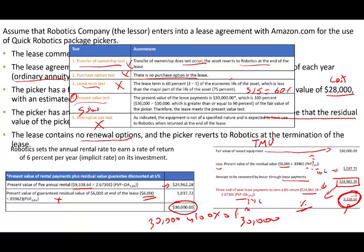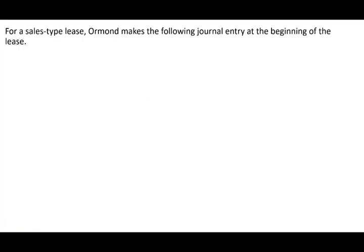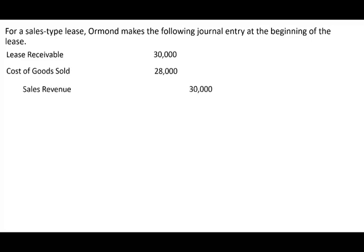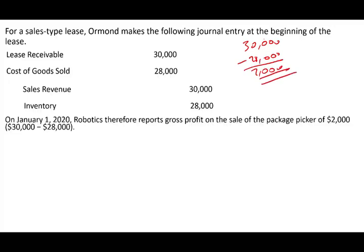Let's do the journal entry for the sales type lease. Robotics will debit lease receivable $30,000 and debit cost of goods sold $28,000, and credit sales revenue $30,000 and credit inventory $28,000. They sold it and removed the robotics from inventory for $28,000. Notice Robotics booked a profit of $2,000 immediately — this is characteristic of a sales type lease: the profit is recognized right away when the sale is made.